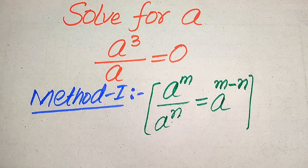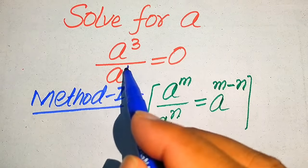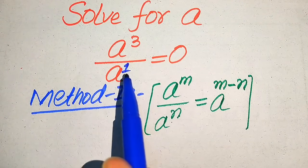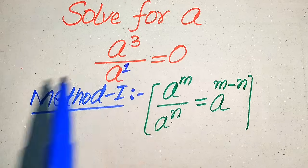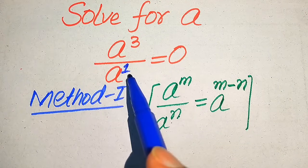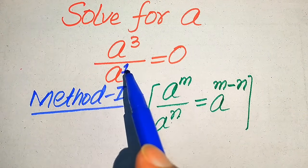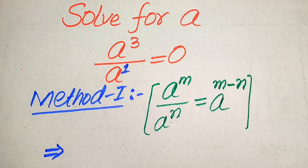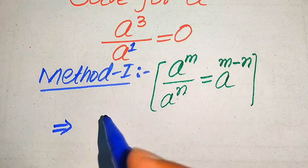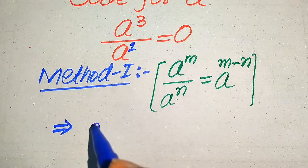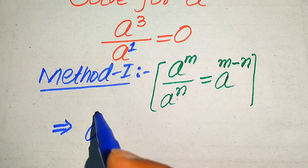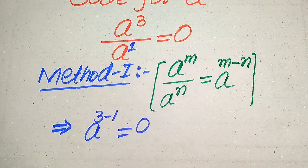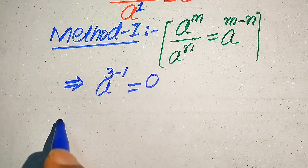We compare the exponents of the two terms. The exponent of the denominator term is 1 and the exponent of the numerator term is 3, so the smaller exponent is 1 and the larger is 3. We move 1 towards 3, and after applying this exponent law we write the equation as a to the power of 3 minus 1 equals 0.